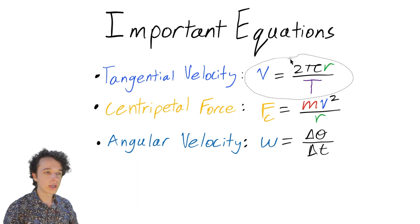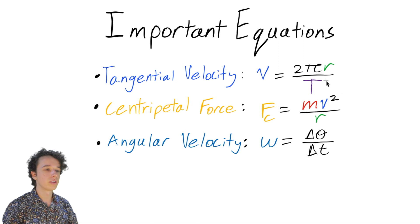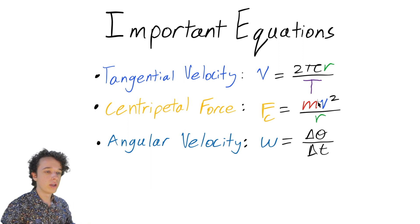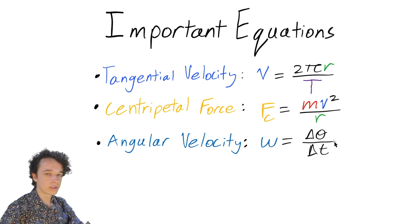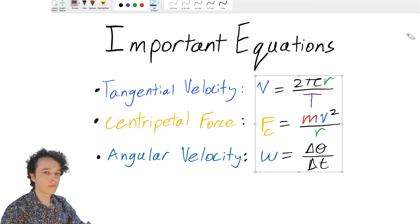The first equation is for tangential velocity: v = 2πr / T, where r is the radius and T is the period. The second equation is centripetal force: F = mv²/r, where m is the mass and v is the tangential velocity. The third equation is angular velocity: ω = Δθ / Δt, where t is time, not period. I'll reference all three equations in the following five questions.